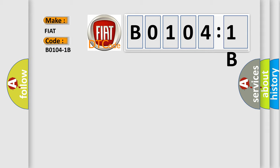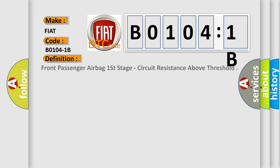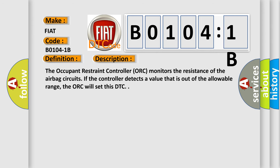The basic definition is: front passenger airbag first stage, circuit resistance above threshold. And now this is a short description of this DTC code. The occupant restraint controller (ORC) monitors the resistance of the airbag circuits. If the controller detects a value that is out of the allowable range, the ORC will set this DTC.